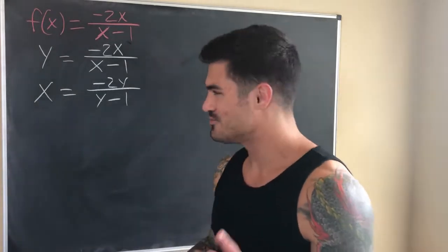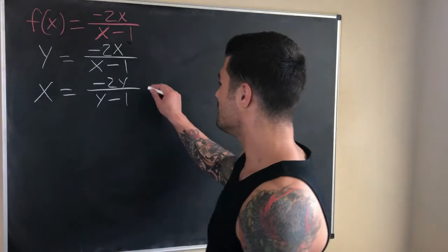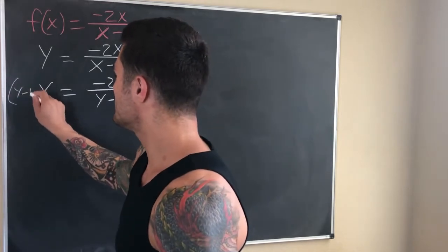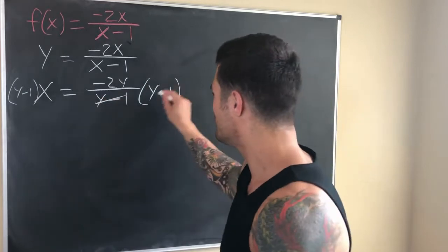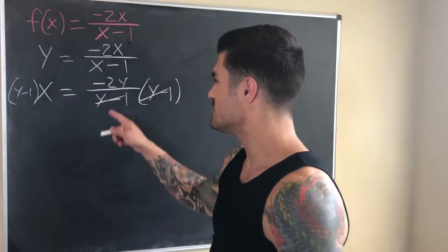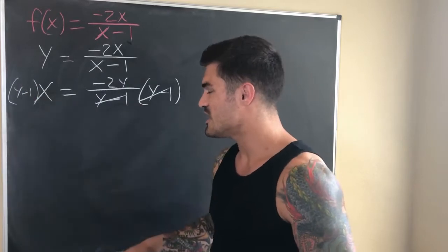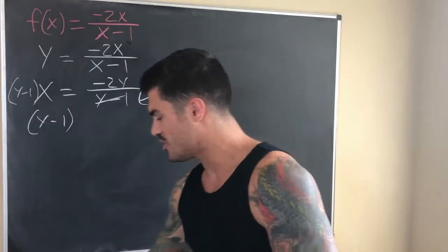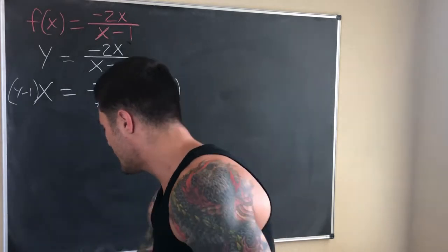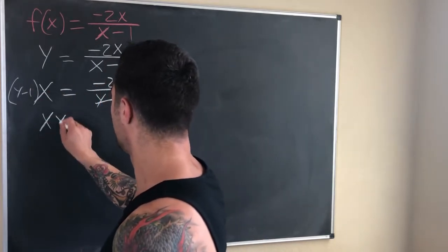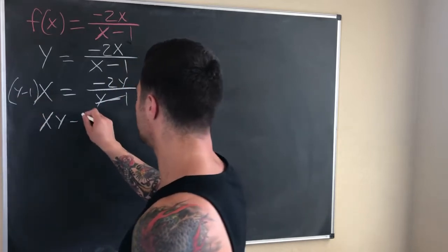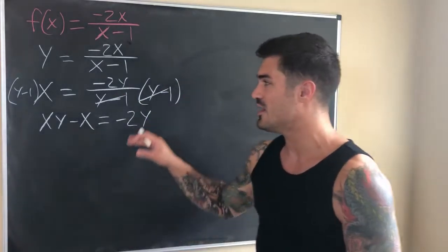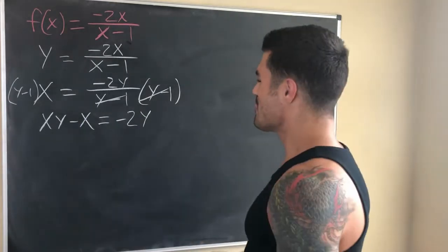The first thing I want to do is get rid of this fraction. Anything with fractions is typically harder to deal with, so whenever we have the chance to eliminate a fraction, we do that. Multiplying through, we get (y − 1) times x distributed: x times y minus x equals what we're left with on the other side, which is negative 2y. Pause the video here if you need to and check that the algebra is correct.